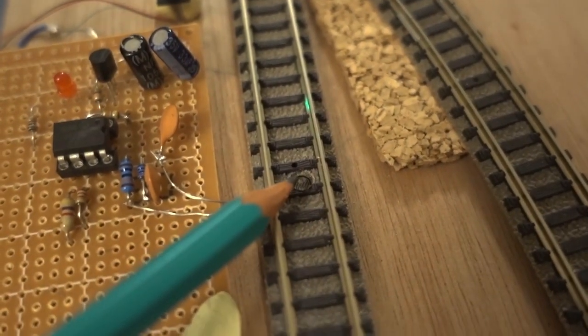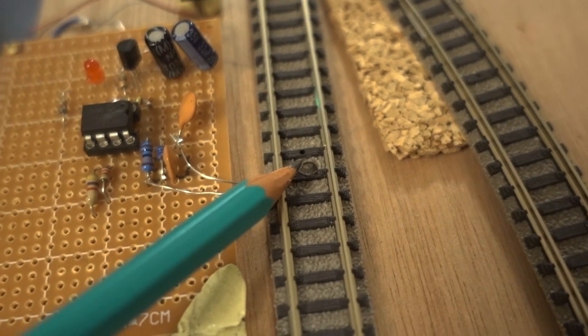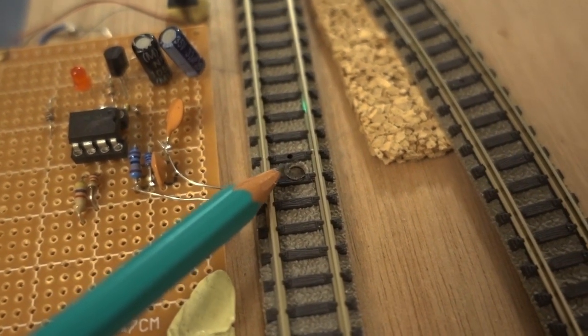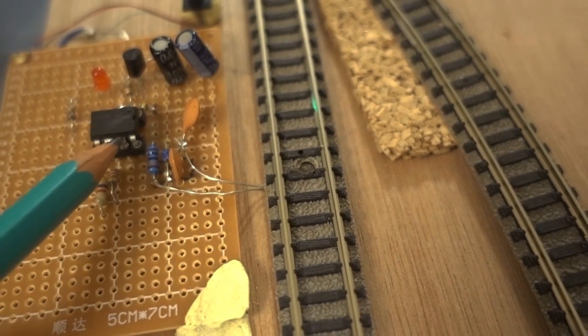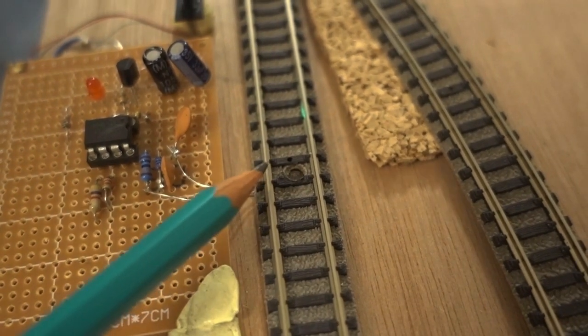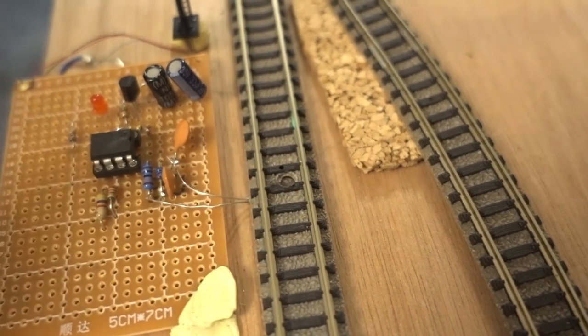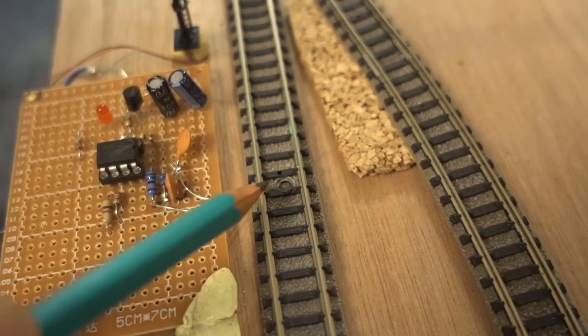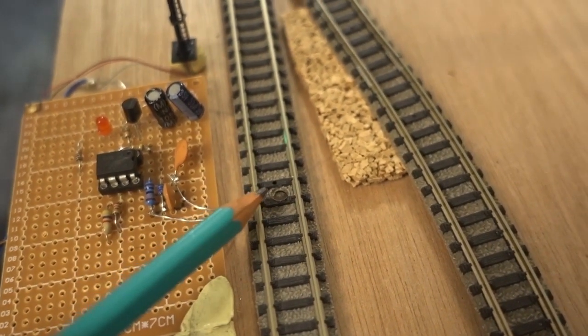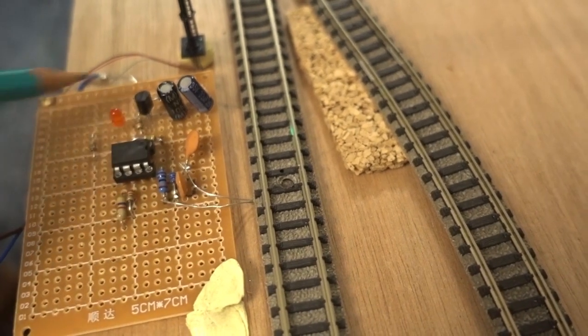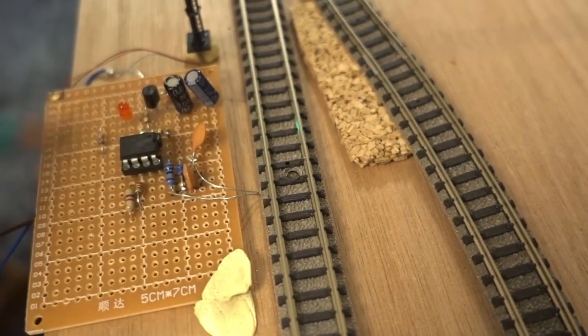I drilled a hole in the track. And beneath that hole is a light-dependent resistor, which is connected into the PIC. This light-dependent resistor senses the train, and it's automatically adjusted for the current ambient light level. So you'll see that on the circuit, there are no potentiometers to set it up.